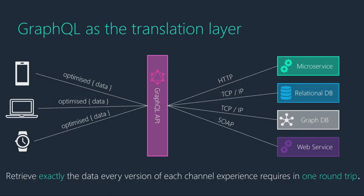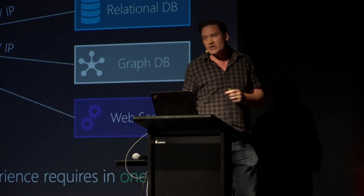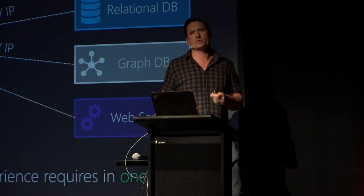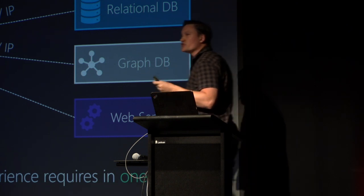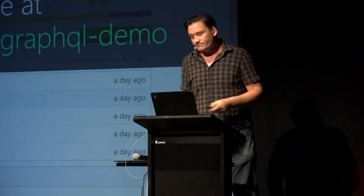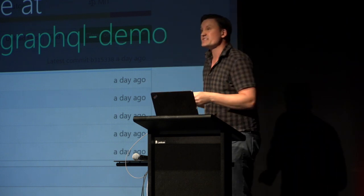This is really one of the main use cases positioning GraphQL today as a translation layer sitting in front of all your traditional interfaces — your modern HTTP microservices, relational databases, graph databases over TCP. We retrieve exactly the data that your mobile app, your wearable, or your website needs in one round trip. With mobile apps, you can't just hit F5 like on a website; you have to push out a new version, so optimizing the data requirements for each version of that app matters.